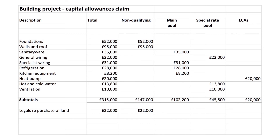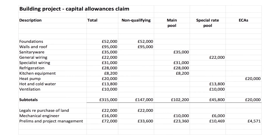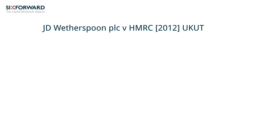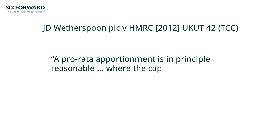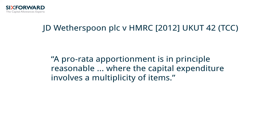By contrast, the professional fees charged by a mechanical engineer may qualify in full, though it will sometimes be necessary to apportion them between standard and special rate expenditure. Other fees should be apportioned pro rata to the various categories of qualifying and non-qualifying expenditure unless there are good grounds for any other approach. The Upper Tier Tribunal in the Wetherspoon case unhesitatingly agreed that a pro rata approach should be used where a detailed item-by-item attribution would be disproportionately time-consuming or expensive.